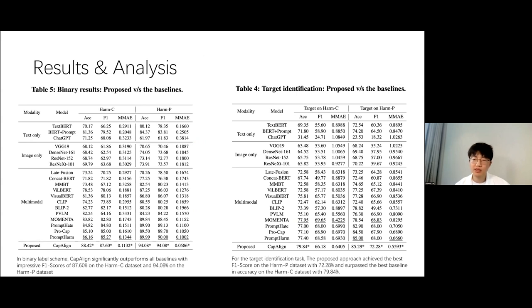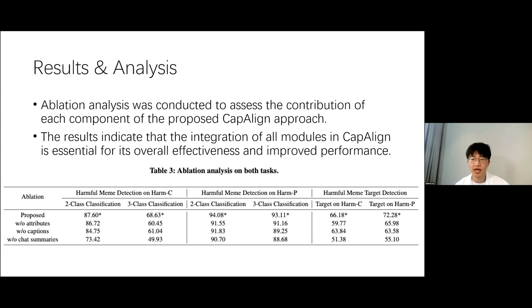When subjected to assessment through a binary label task, KappaLine exhibits marked superiority over its baseline methods, evidenced by significant F1 scores on the HateMM-C and HateMM-P datasets respectively. In the task of target identification, our proposed methodology achieves the highest F1 score on the HateMM-P dataset and surpasses baseline accuracy by a significant margin on the HateMM-C dataset, highlighting the effectiveness of modality alignment and prompt-based tuning. Ablation studies assess the importance of each component — by removing captions, attributes, and chat summaries separately, we observed a significant decrease in performance, highlighting the crucial role of each component.